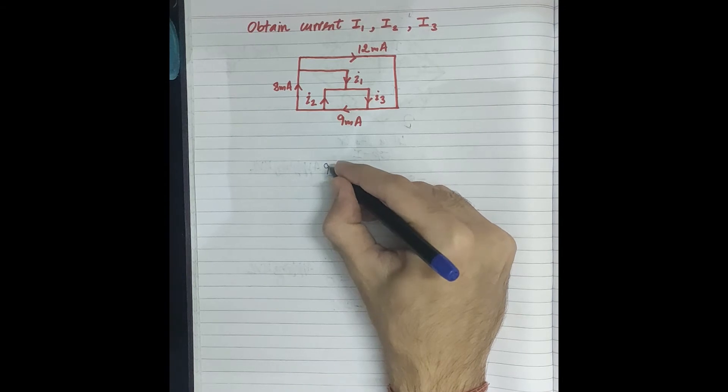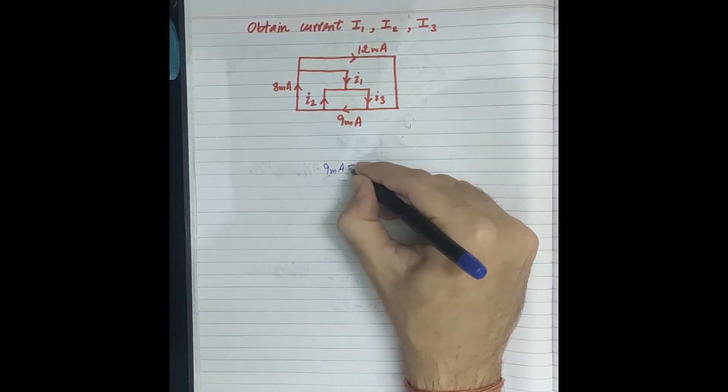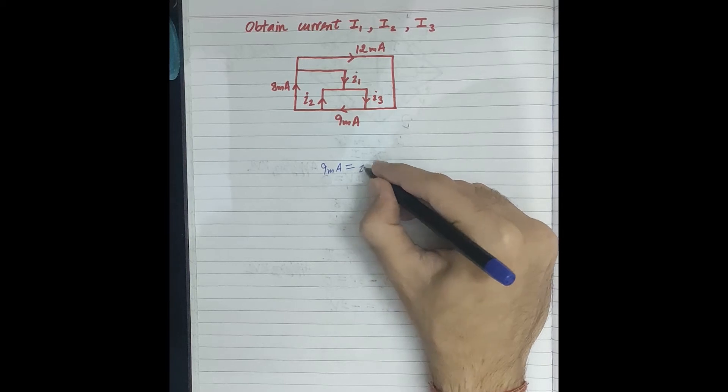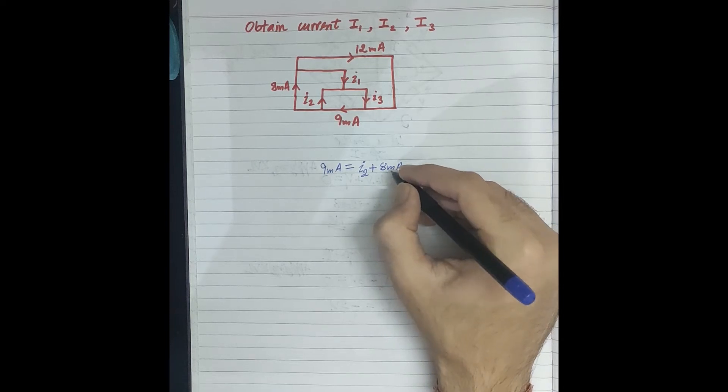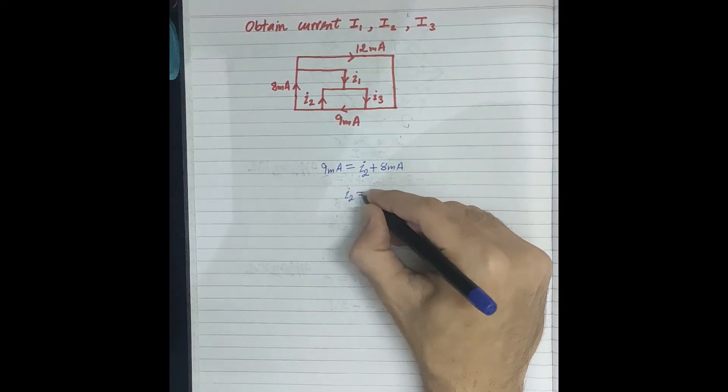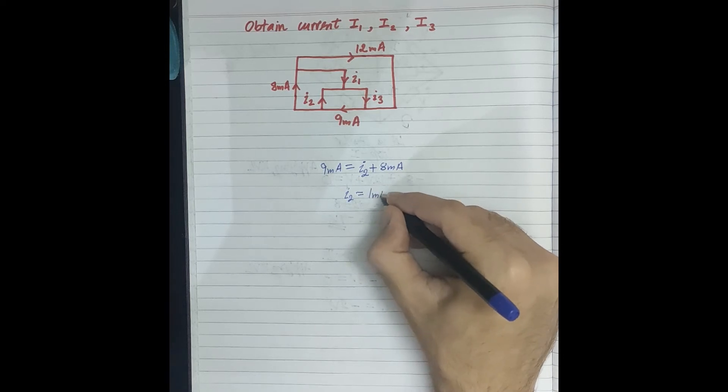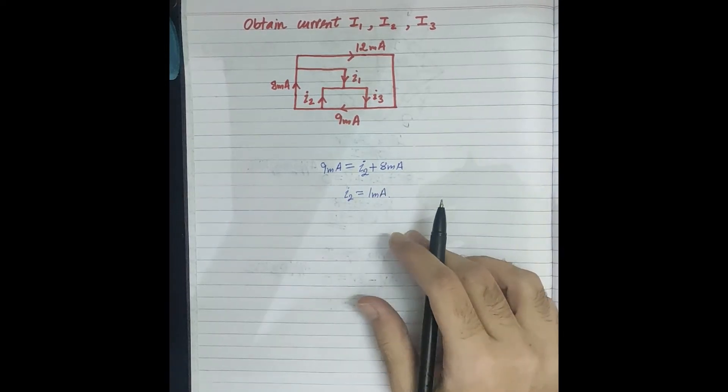That is I2 plus 8 mA. What will I2 be from here? 9 minus 8 equals 1 mA. So we have found I2.